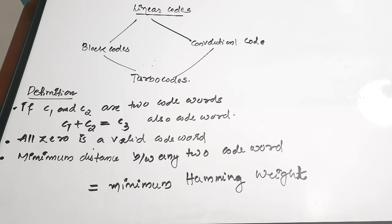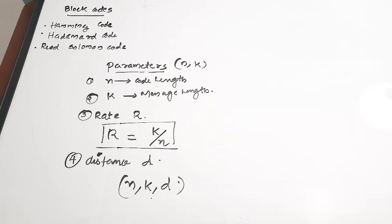These linear codes can be classified into two categories: linear block codes and linear convolutional codes. There is also a hybrid of these two which is called turbo codes. So linear codes have mainly three classifications: block codes, convolutional codes, and a hybrid of block and convolutional codes which is turbo codes. The main examples of block codes are the Hamming code, Hadamard, and Reed-Solomon code.